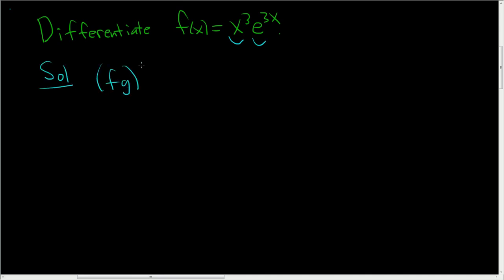So we have f, g, and the way I remember the product rule is I think of f as the first function and g as the second. So it's the derivative of the first times the second plus the first times the derivative of the second.